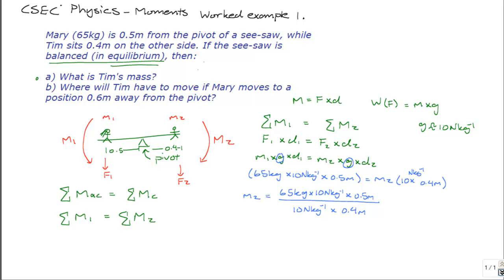Notice that 10 N per kilogram, which is the gravitational acceleration, appears both in the numerator and the denominator of this expression, and so it cancels out, it can be left out. If you work out this value, you get a mass of 81.25 kilograms. Notice, meters cancel, so you're left with kilogram as your final unit, and this is your answer for Tim's mass.